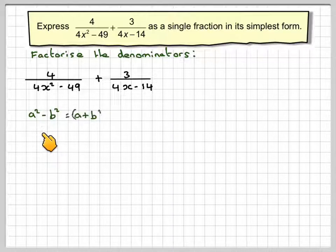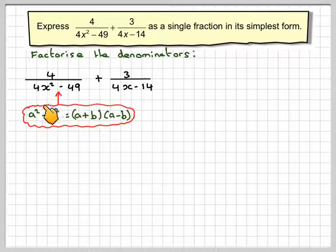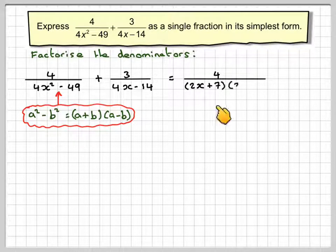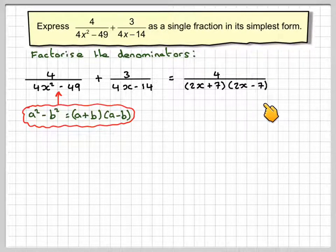This is of the type a squared minus b squared. We've got 4x squared minus 49. So that becomes a plus b, a minus b. So it becomes 4 over 2x plus 7, 2x minus 7.